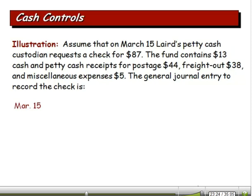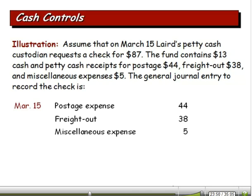Assume on March 15th the custodian requests a check for $87 to replenish the fund — it still has $13 in cash. Out of the initial $100, we spent $44 for postage, $38 on freight out, and $5 on miscellaneous expenses. To replenish the fund, we debit the expense accounts — postage, freight out, miscellaneous expense — and credit Cash for $87. We write a check, bring back $87, put it in the petty cash fund, and now the fund is back to $100.